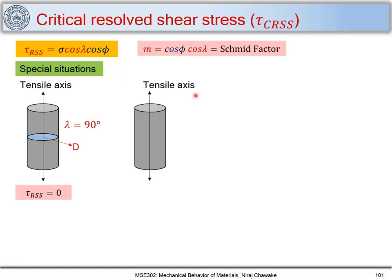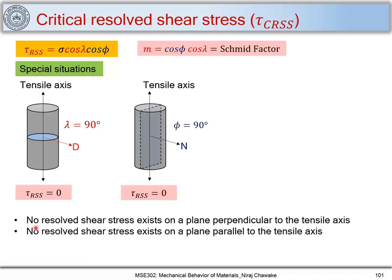The other extreme is where the slip plane is parallel to the tensile axis. In this case the slip plane normal makes phi = 90° with the tensile axis, and tau_RSS again comes out to be zero. So for these two extreme cases — slip plane perpendicular or parallel to the tensile axis — there will be no shear stress on those planes.